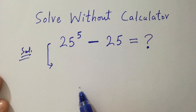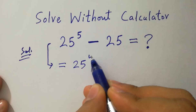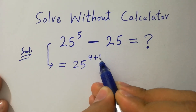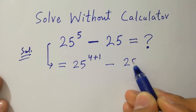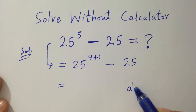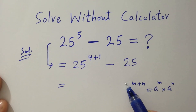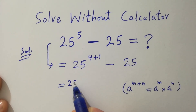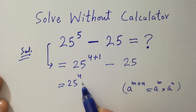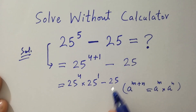This problem is the same as 25 to the power 4 plus 1 minus 25. Since 4 plus 1 is 5, and since a to the power m plus n equals a to the power m times a to the power n, it will be 25 to the power 4 times 25 to the power 1, minus 25.